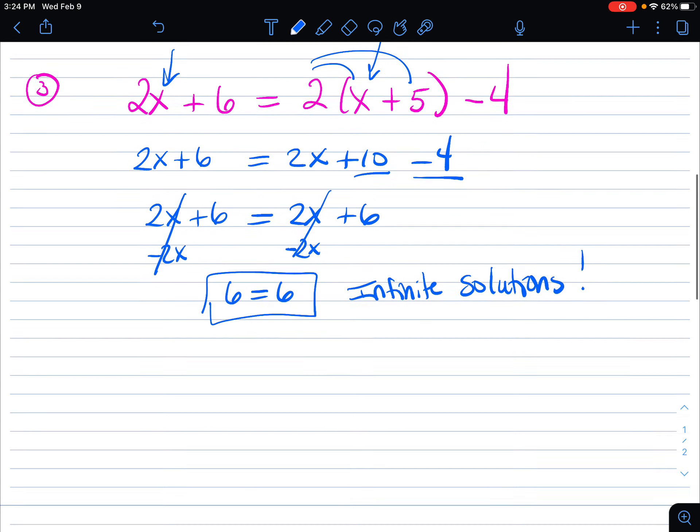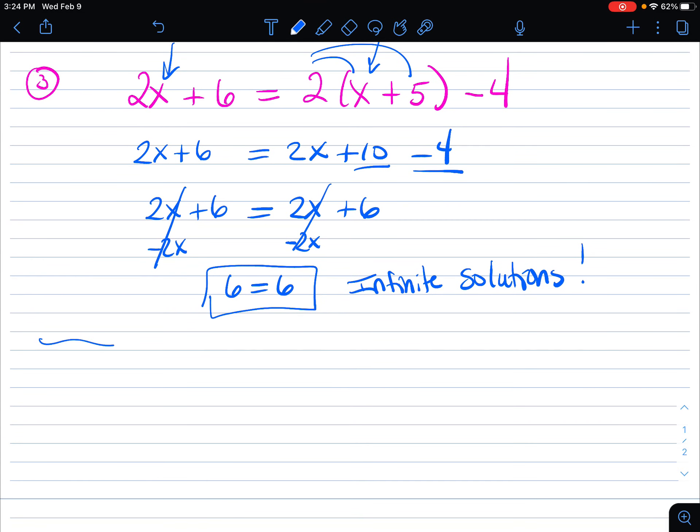The flip of this is if you had variables cancel out, but you were left with, let's say, this. 4 equals 6. 4 does not equal 6. In that case, you would be left with no solution. That means whatever this original equation was, there's nothing that you could plug in to make that equation true. So those are two special situations you might come into. Infinite solutions and no solutions.